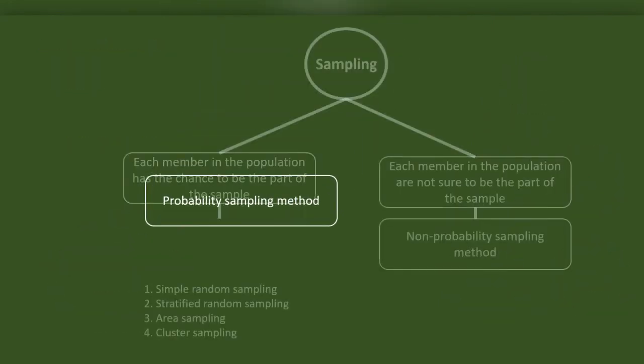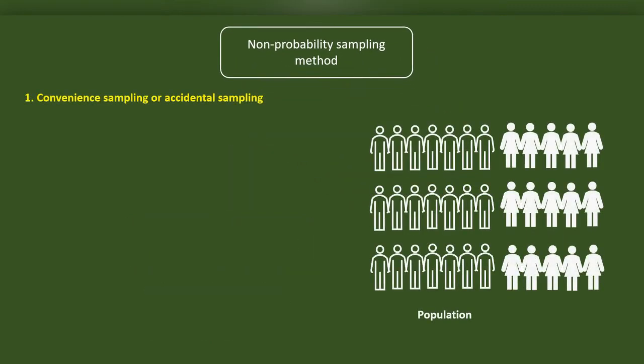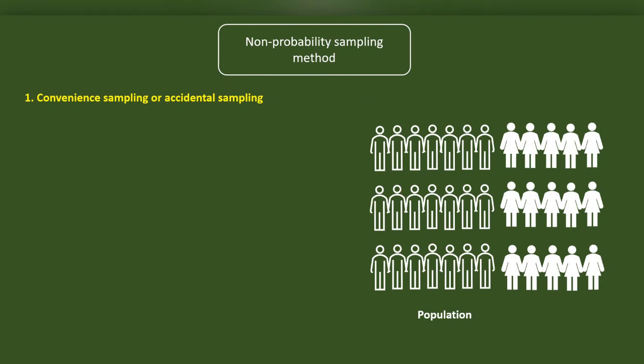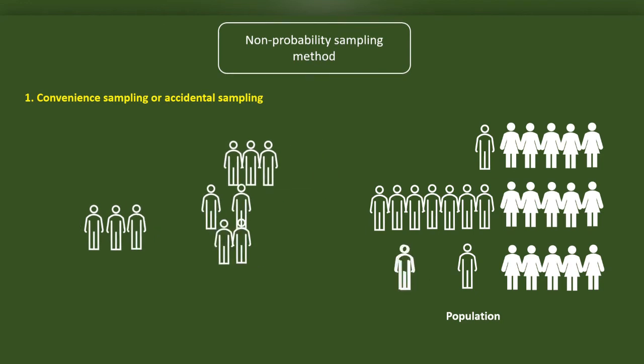If the sampling method cannot ascertain that all the members of the population have the probability to be chosen to the sample, then the sampling method is a non-probability sampling method. The most popular non-probability sampling method is convenient sampling or accidental sampling method. Here, we will select our sample as we meet them. There is no presupposed strategy. We may meet them individually or in groups. We may continue this process until we achieve a sufficient sample size.